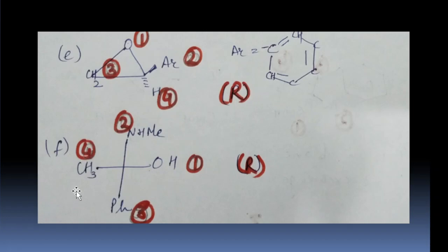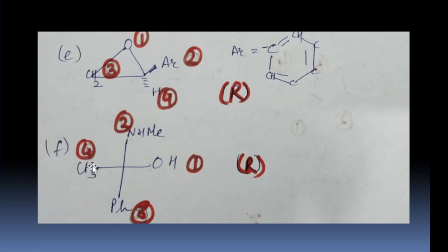Next example — this is a Fischer projection with OH, NH, PH, and CH3. OH is given number 1, NH is number 2, PH is number 3, and CH3 is number 4. Going 1, 2, 3 we get S. But the lowest priority is on the horizontal, so we reverse it and we get R. R is the answer.